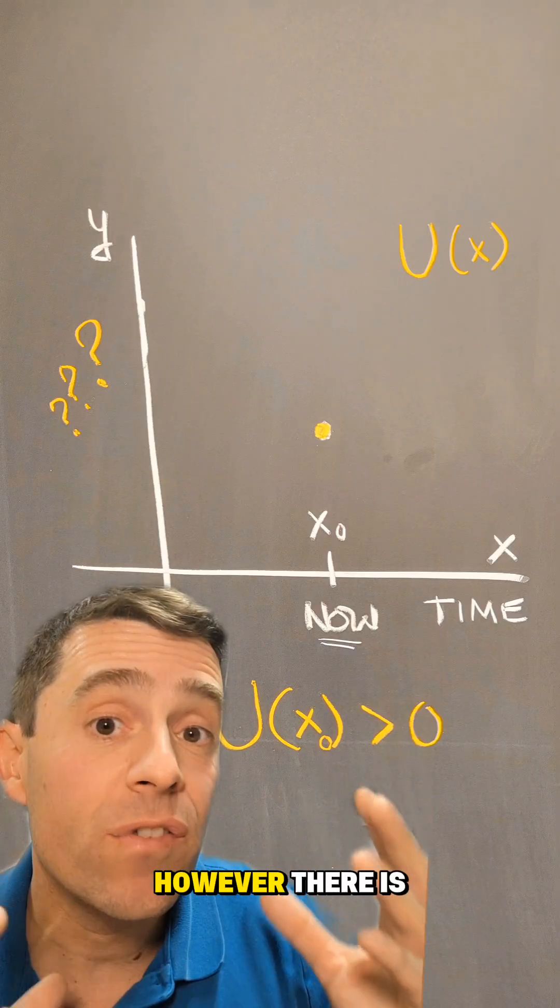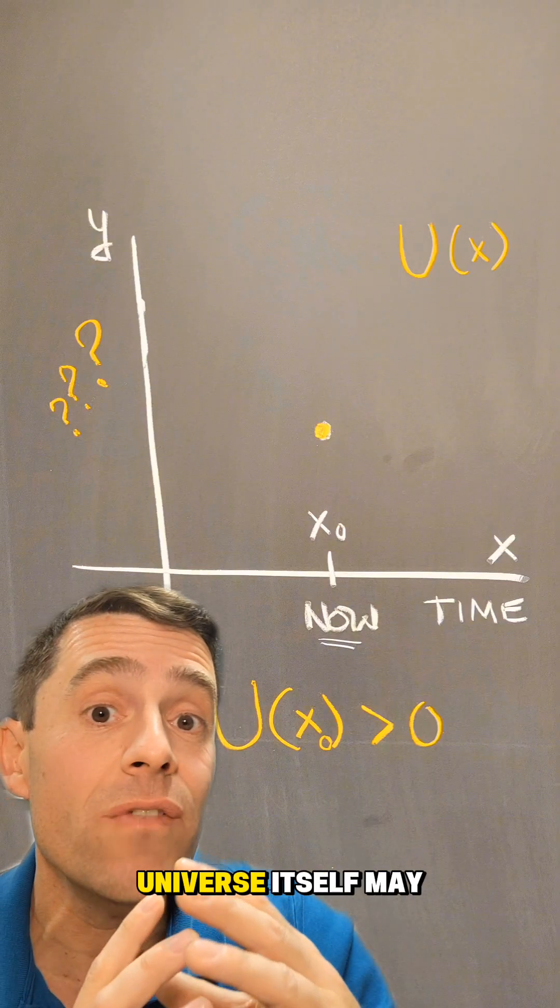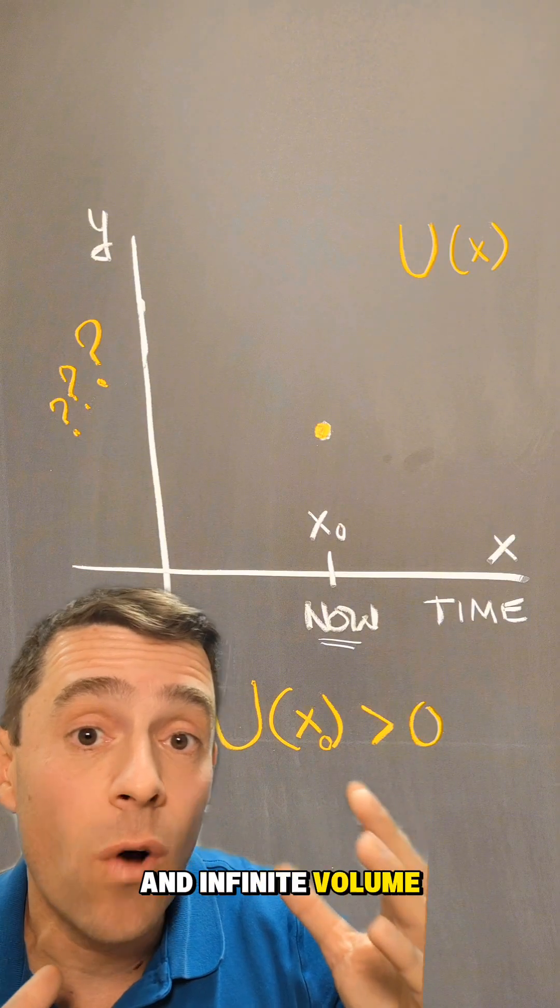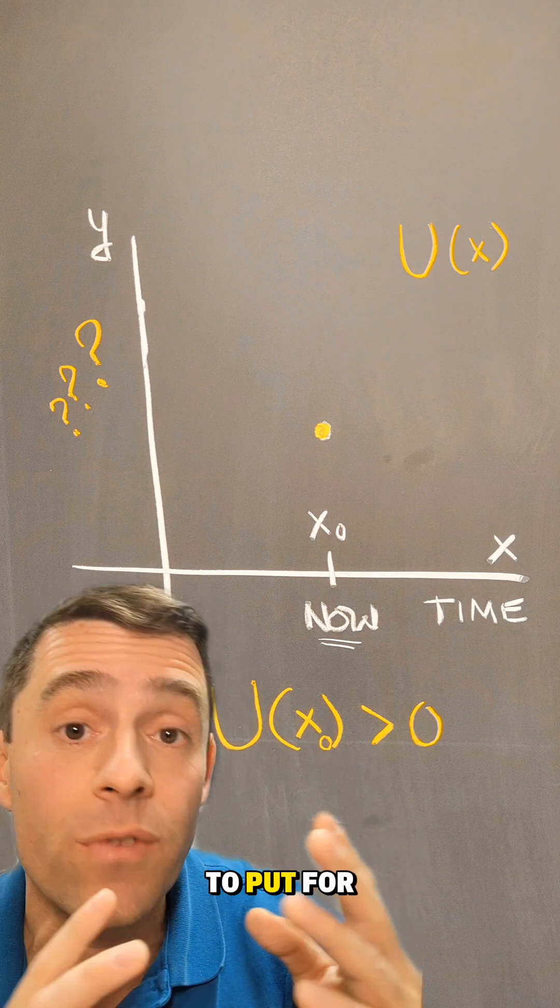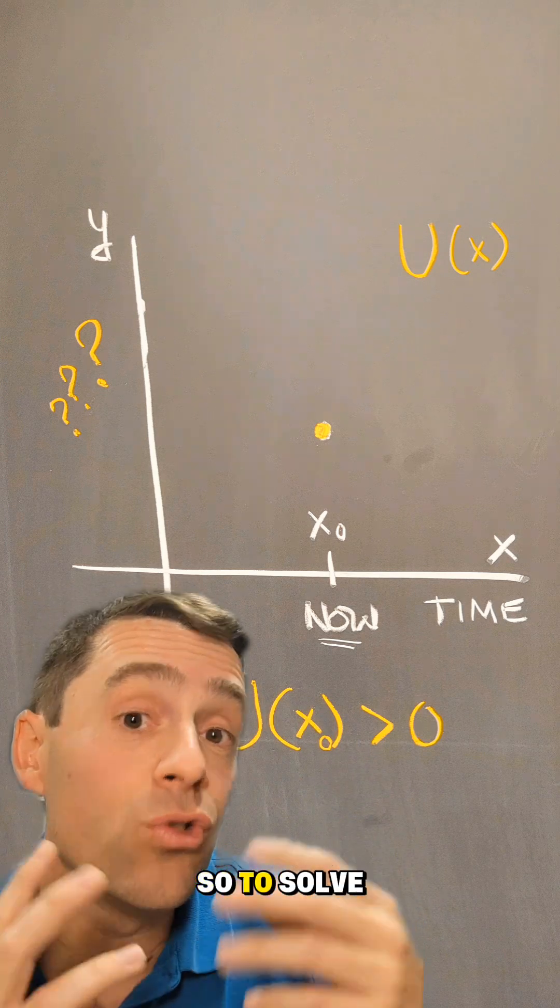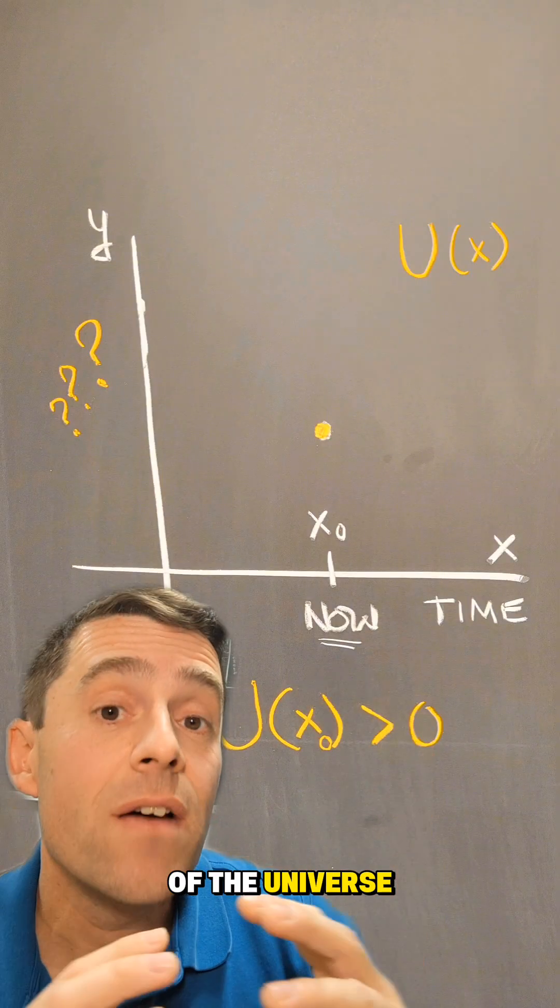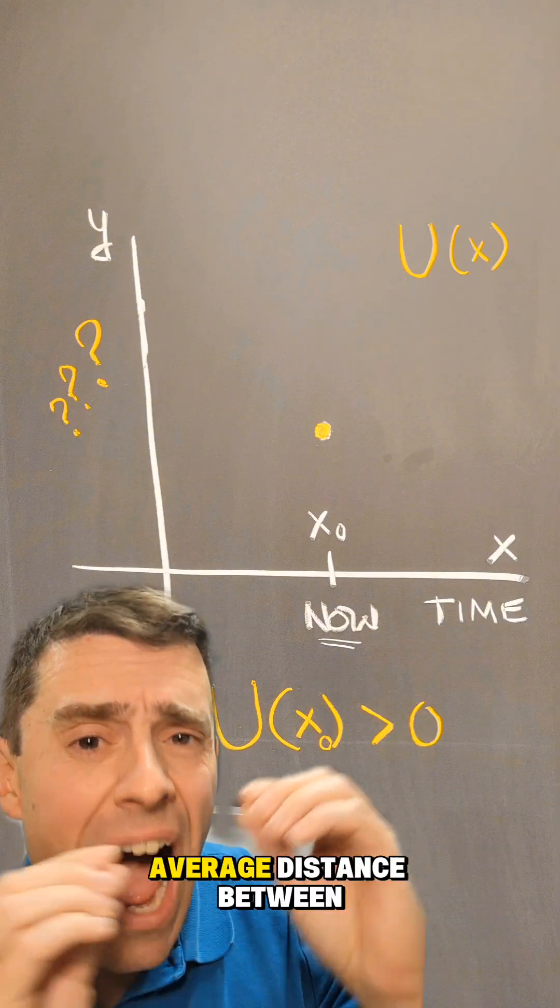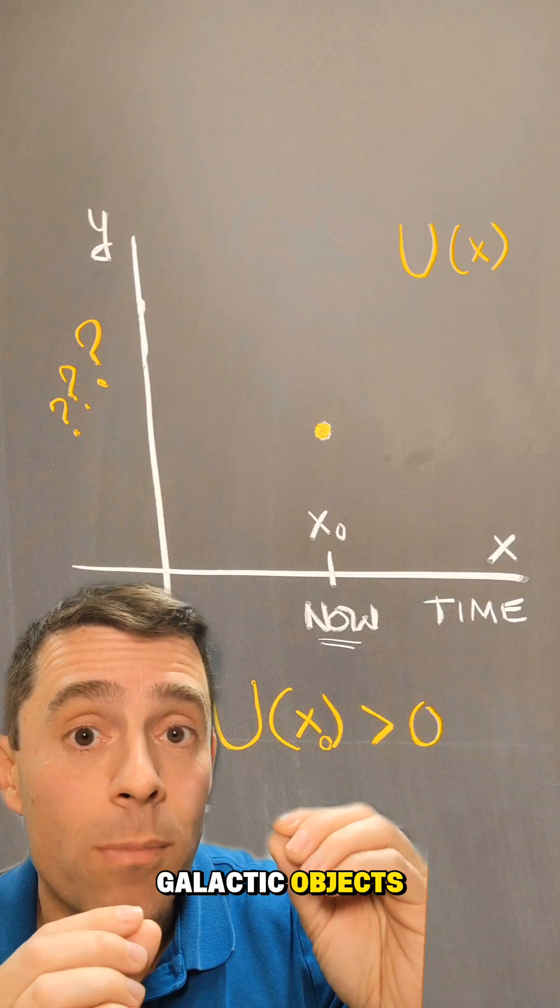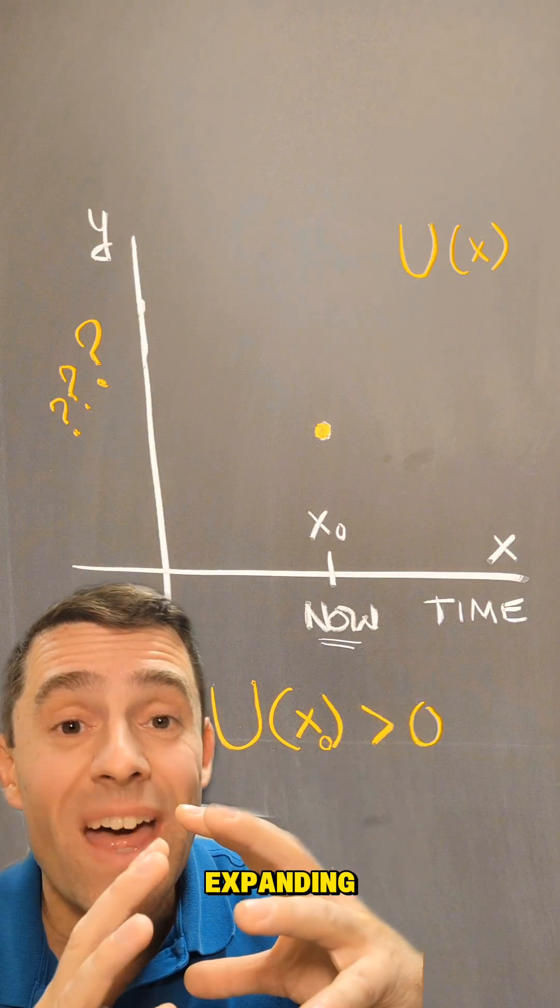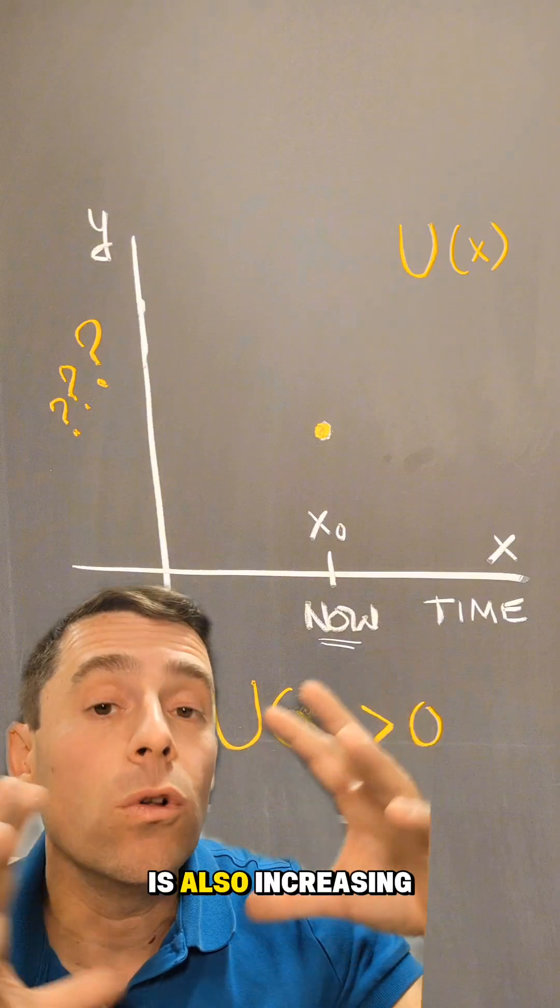However, there's a problem with this in that the universe itself may be infinite in size and infinite volume. So what units am I going to put for this y-axis? To solve that problem, instead of using the total size of the universe, cosmologists use the average distance between galactic objects such as galaxies. So that if the universe is expanding, that average distance is also increasing.